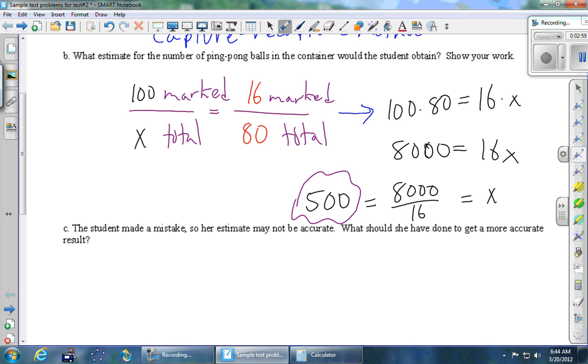Part C. The student made a mistake, so her estimate may not be accurate. What should she have done to get a more accurate result?